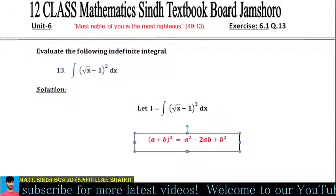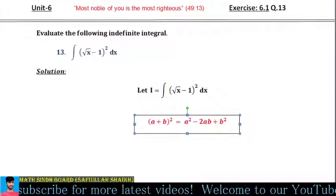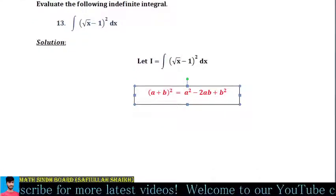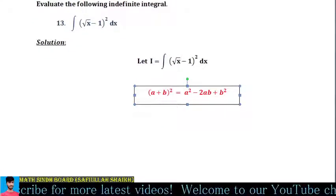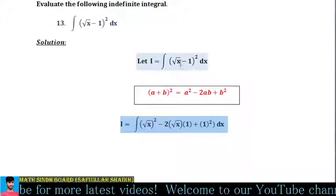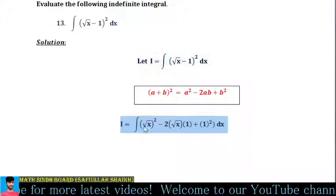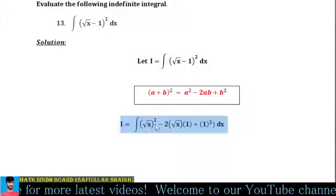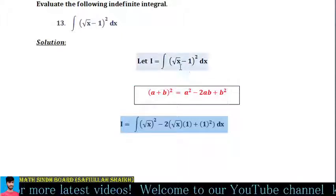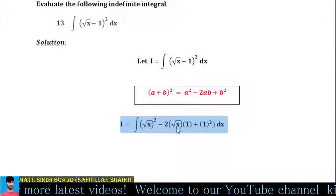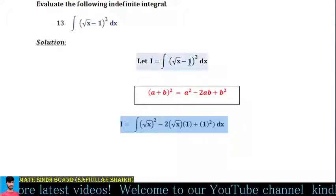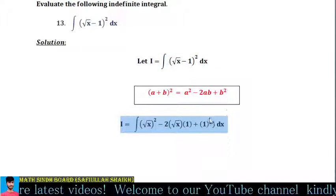First of all, we know that (a + b)² = a² - 2ab + b². Similarly, we use that formula here, so (√x - 1)² expands to (√x)² - 2·√x·1 + 1².